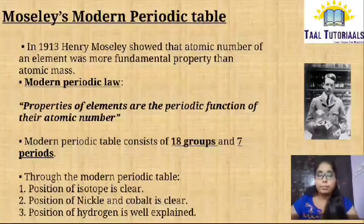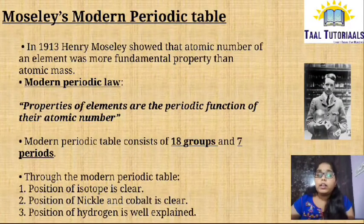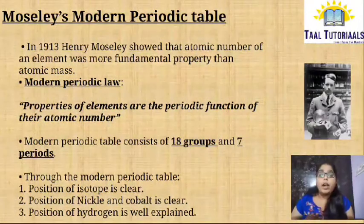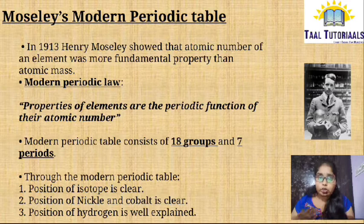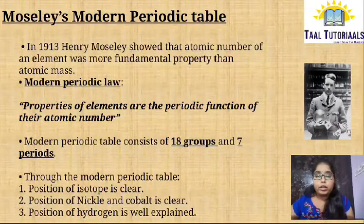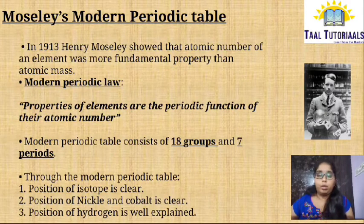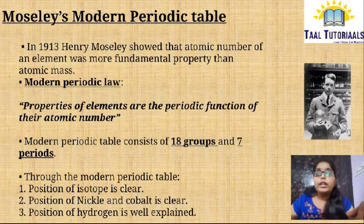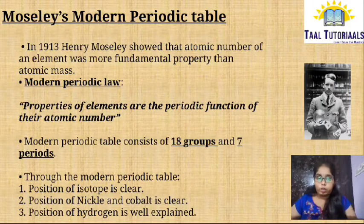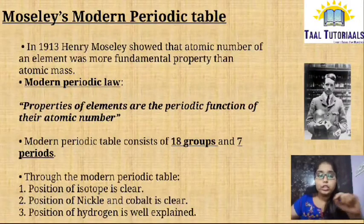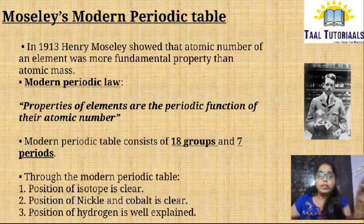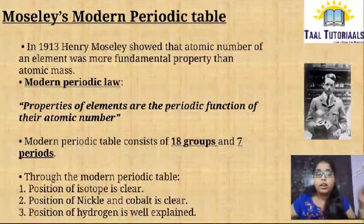Then came Moseley's Modern Periodic Table. In 1913, Henry Moseley showed that atomic number is the fundamental property for the classification of elements. In Mendeleev's table, atomic mass was the fundamental property, but in the modern periodic table, atomic number is fundamental. He gave the Modern Periodic Law: properties of elements are the periodic function of their atomic number. This modern periodic table has 18 groups and 7 periods — 7 rows called periods and 18 columns called groups.